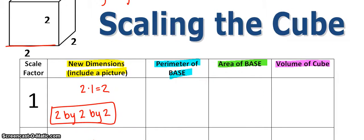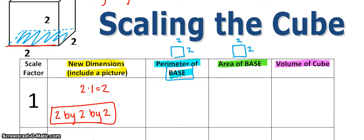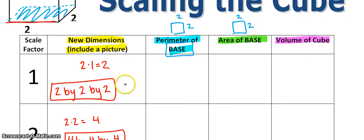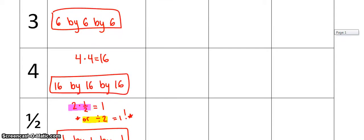A 2 by 2 by 2 scaled by 2 would now be a 4 by 4 by 4 — that's the length, width, and height. What I want us to do now is figure out what happens when you scale the perimeter, the area, and the volume. For the perimeter and area, we're going to talk about the base — just the flat square. So you're going to scale this 2 by 2 square, and figure out what the area of the base would be. For the volume, you're going to take the volume of the whole cube.